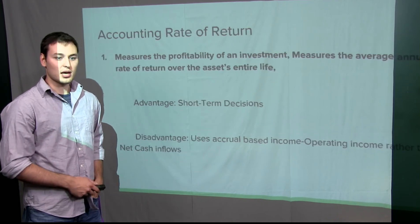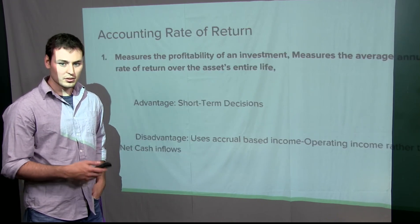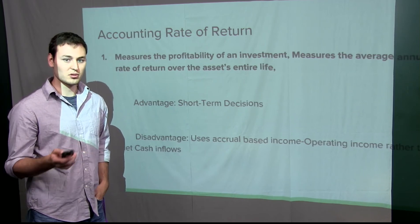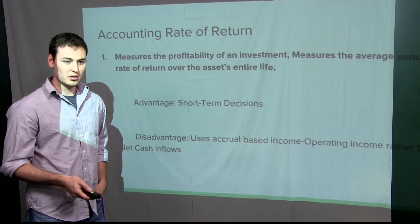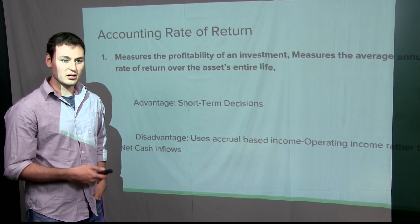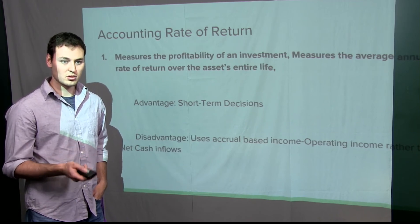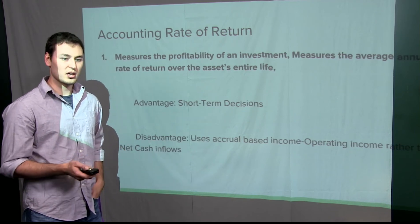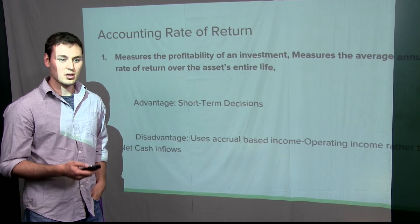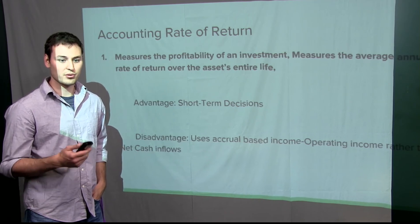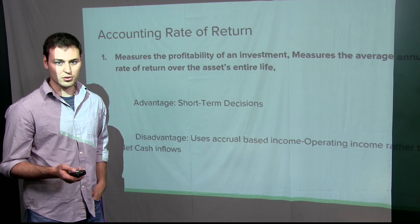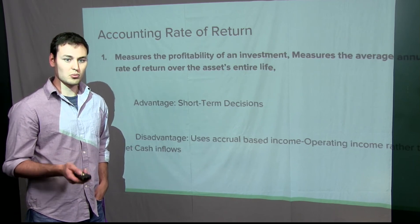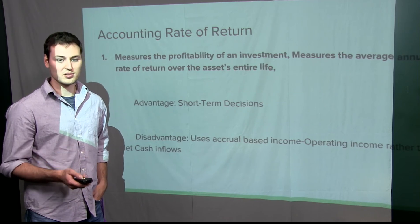Our second method is the accounting rate of return. This measures the overall profitability of an investment over the course of the investment's life. The advantage is that it is used greatly during short-term decisions. The disadvantage is that it uses accrual-based income rather than net cash flows from an investment — and this is the only one of the four methods that uses accrual-based income.